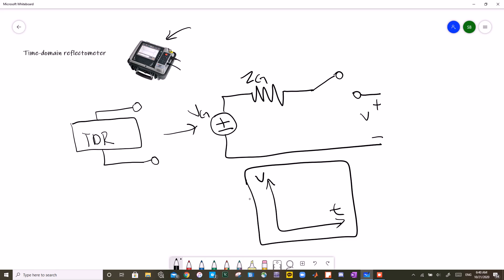But how would you use this to analyze a wire? Well first, you'll take your wire of interest, and you'll connect it to the TDR like so. Then, you'll go into the settings of your TDR, and you'll input the magnitude as well as the pulse width of your generator voltage.